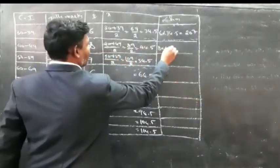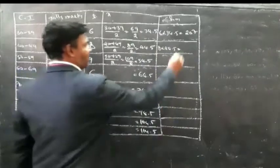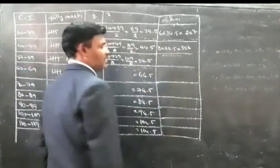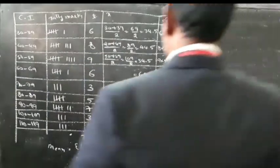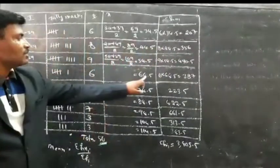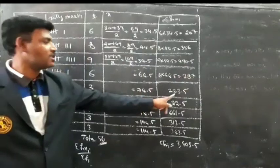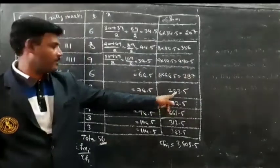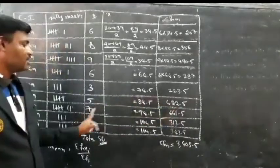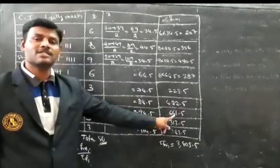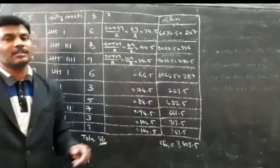Next, 8 into 44.5 equals 356. Then 9 into 54.5 equals 490.5. Then 6 into 64.5 equals 387. Next, 3 into 74.5 equals 223.5. Then 5 into 84.5 equals 422.5. Then 7 into 94.5 equals 661.5. And 3 into 104.5 equals 315.5.